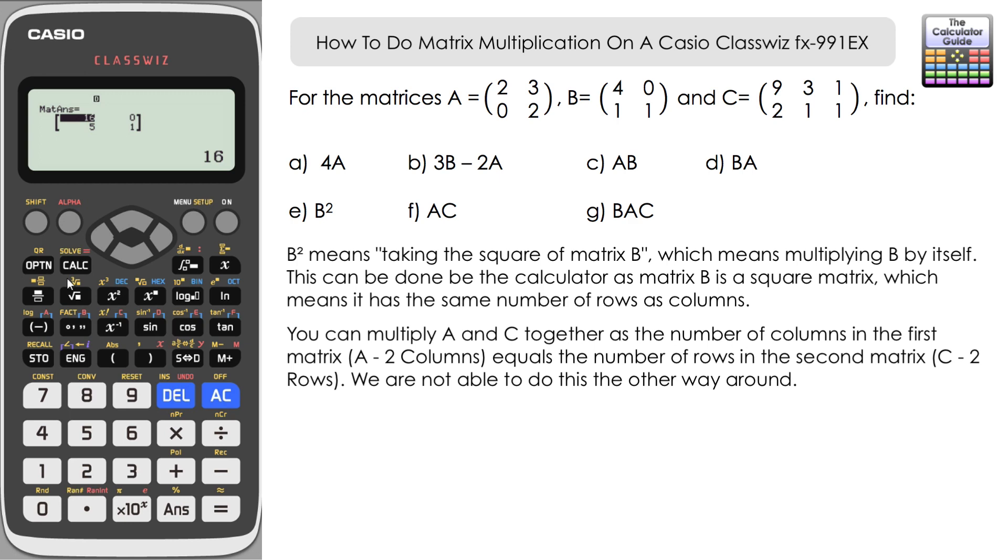So let's just do that first. So it's option matrix A, option matrix C, and you can see that we've got our result here.